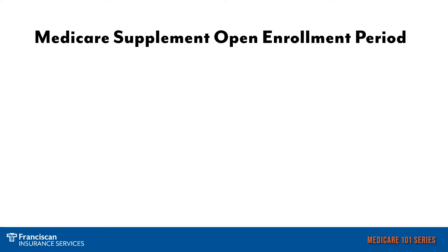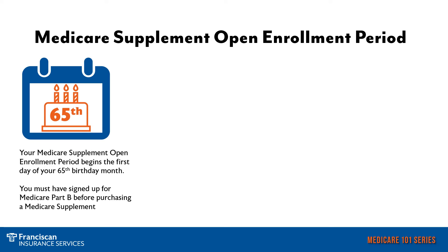Should you decide you would like to enroll in a Medicare Supplement, then the Medicare Supplement open enrollment period is the ideal time to do this, because this is when you can enroll in a Medicare Supplement without any health underwriting. Your Medicare Supplement open enrollment period starts either the month you turn 65 or when you first take your Part B. Some people choose to take their Medicare Parts A and B when they turn 65, and then their Medicare Supplement open enrollment period would begin then. Others choose to wait, maybe because they still have employer coverage or some other type of coverage, and therefore they have postponed their Part B enrollment. Once you enroll in your Medicare Part B, that will trigger your Medicare Supplement open enrollment period.